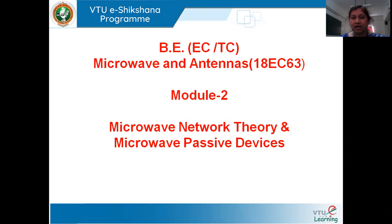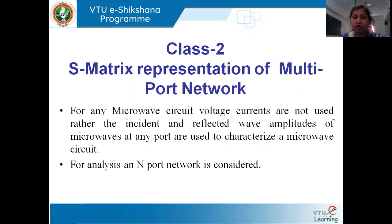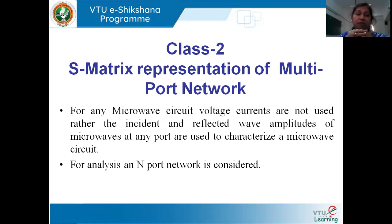In the last class, we discussed some differences between a general network and a microwave network. In a normal network, we specify the network in terms of input voltage, output voltage, input current, and output current, with a relationship between voltage and current at the input and output ports in terms of Z-parameter, Y-parameter, H-parameter, and ABCD parameters. But in a microwave network, it is not in terms of voltage or current — rather it is in terms of a microwave signal.